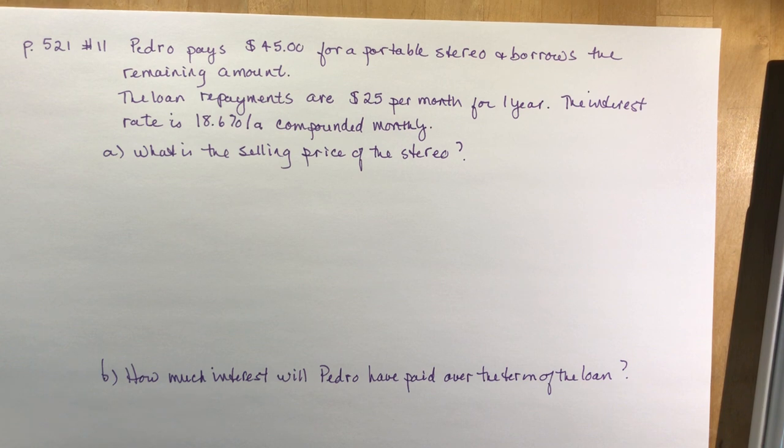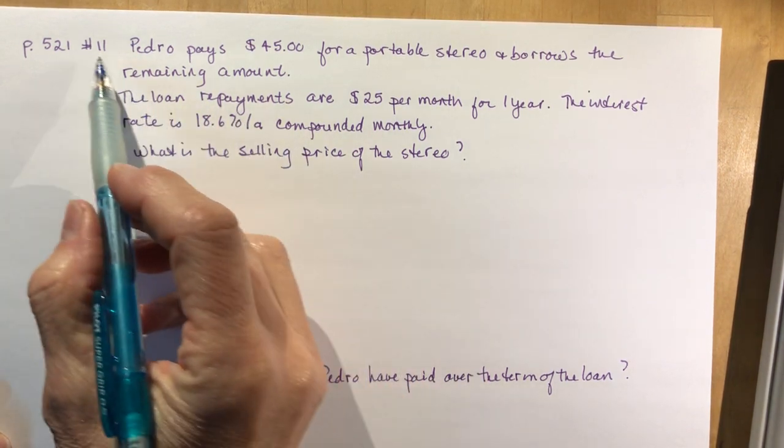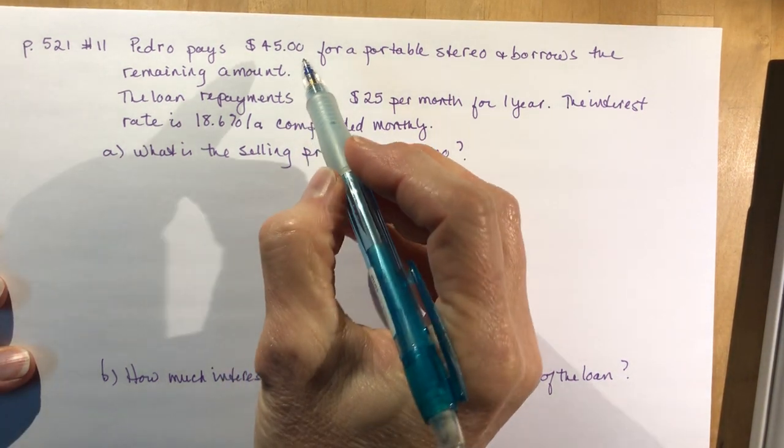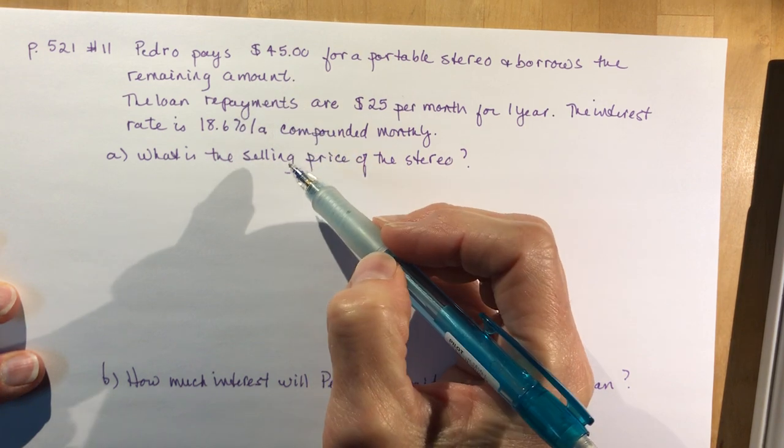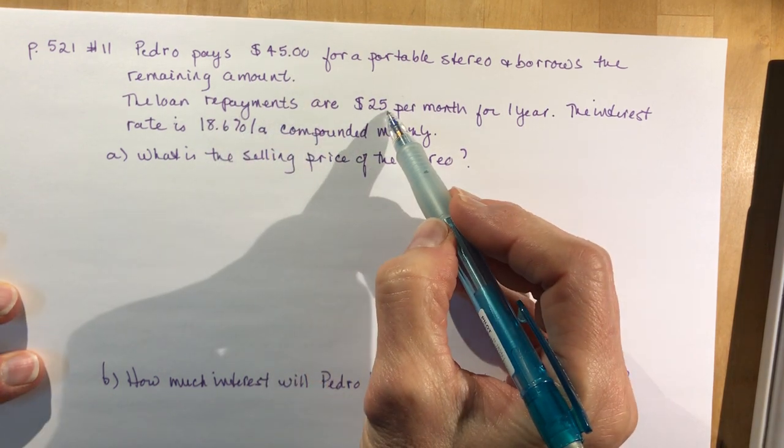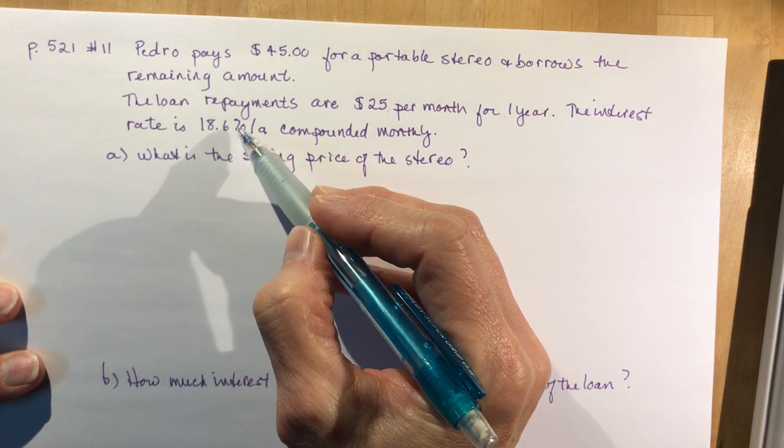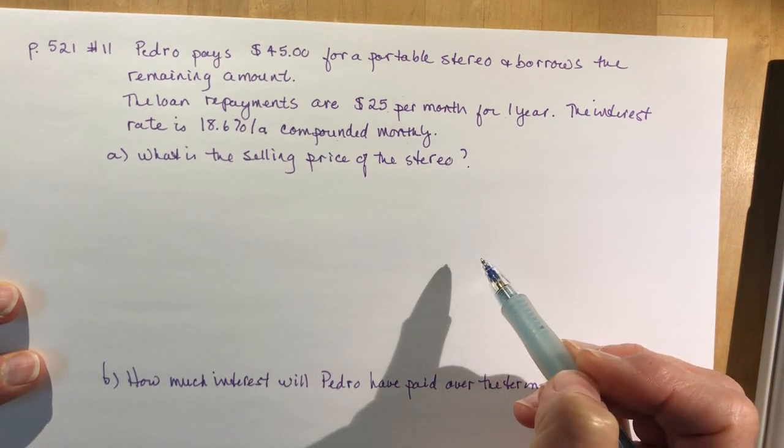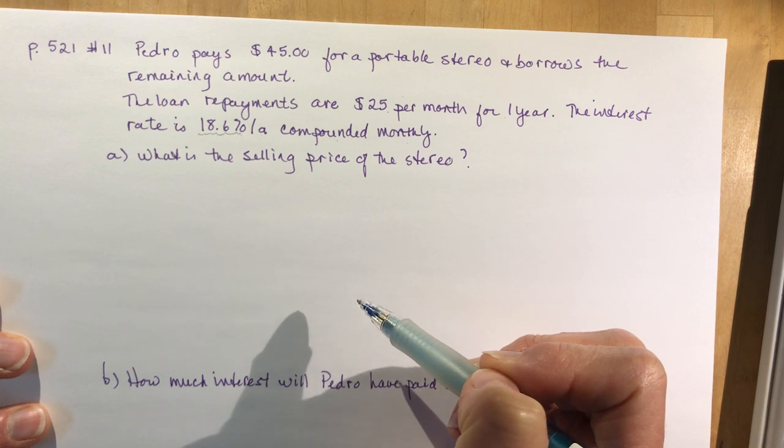The last question I'm going to do is question number 11 from page 521. It says Pedro pays $45 for a portable stereo and borrows the remaining amount. The loan repayments are $25 per month for one year. The interest rate is 18.6% per annum compounded monthly. What is the selling price of the stereo?